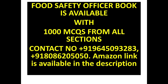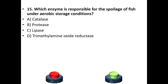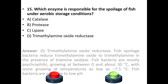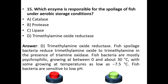Fifteenth question: Which enzyme is responsible for the spoilage of fish under aerobic storage conditions? Options: catalase, protease, lipase, trimethylamine oxide reductase. The answer is option D — trimethylamine oxide reductase. Fish bacteria reduce trimethylamine oxide to trimethylamine. Fish bacteria are mostly psychrophilic, growing between 0°C and 30°C, with some growing as low as -7.5°C, and are sensitive to low pH.